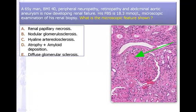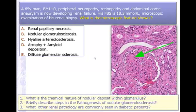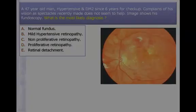65-year-old man with peripheral neuropathy, retinopathy, abdominal aortic aneurysm — all complications of atherosclerosis — and very high glucose. So he is diabetic with atherosclerosis. Microscopic examination of his kidney biopsy shows nodular glomerulosclerosis. The chemical nature is AGE protein. What other renal pathology is commonly seen in diabetic patients? Pyelonephritis, nodular glomerulosclerosis, diffuse sclerosis, end-stage kidney, and renal papillary necrosis.